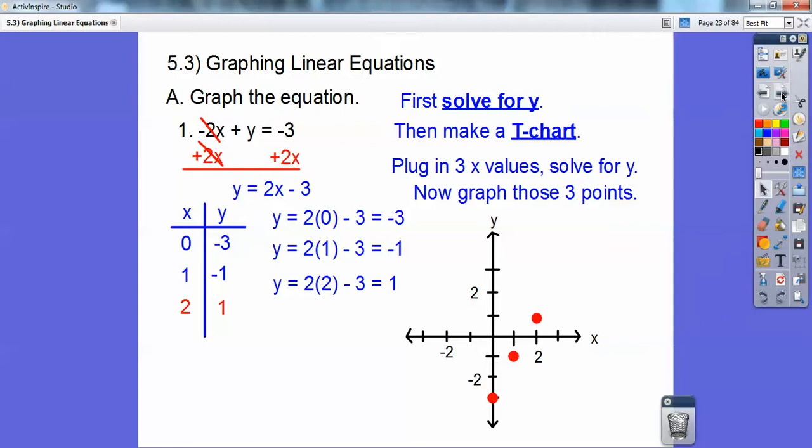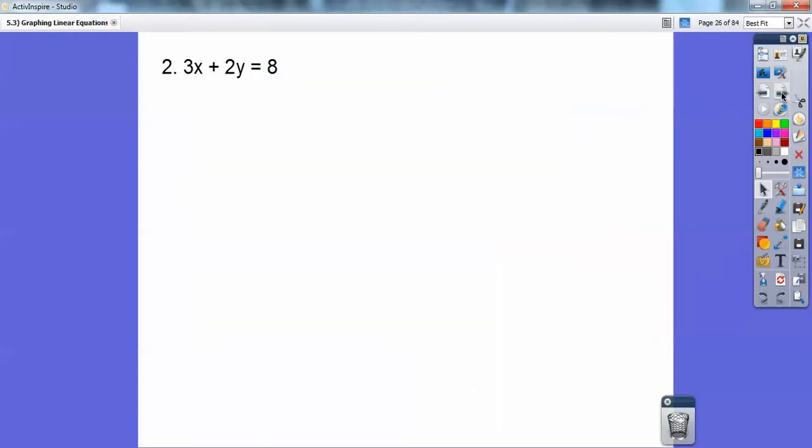Look, they make a nice straight line. And so since we're graphing this whole equation, then we're going to go ahead and connect those three points with a straight line right there. And then from now on, always write the equation next to the line because sometimes you'll have more than one equation in your graph, especially when they're asking to see where they intersect and that's coming up. So you have to write the equations next to the graph.